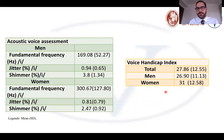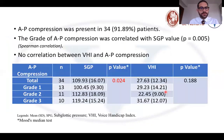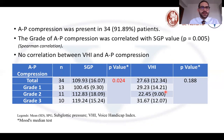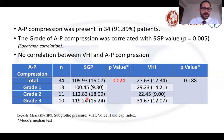The mean Voice Handicap Index score was 27.8. Regarding AP compression, it was present in 34 patients, or 91.8%. The grade of AP compression was correlated with subglottic pressure value, but there was no correlation between the Voice Handicap Index and AP compression. Importantly, we found a statistically significant difference in subglottic pressure values across the different grades of AP compression, but no statistically significant difference regarding the Voice Handicap Index across the three grades.